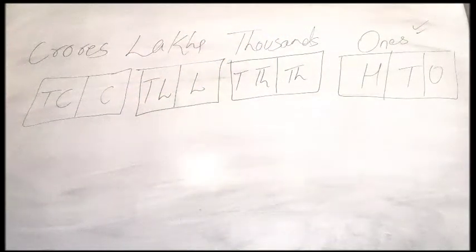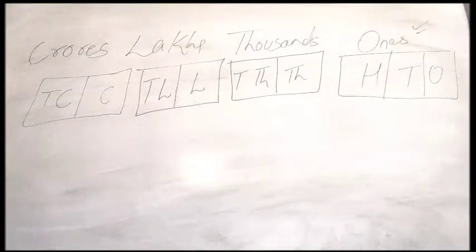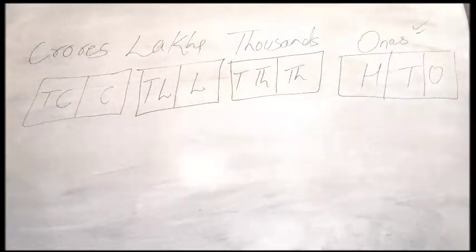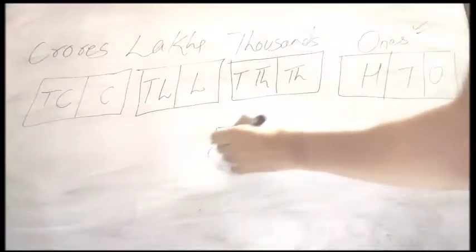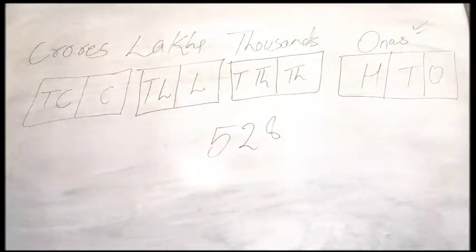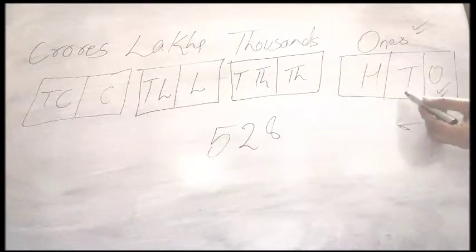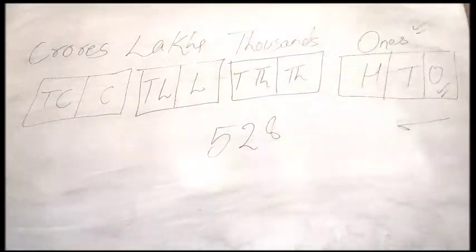So why have I written it this way? Because we read the Indian number system according to this structure. If I write any number like 528, the first number is from ones. We have to read from the back — that is ones, tens, hundred, thousand, ten thousand, and so on.